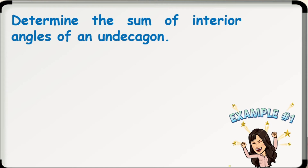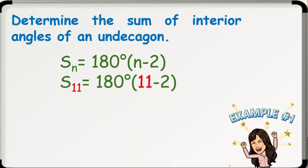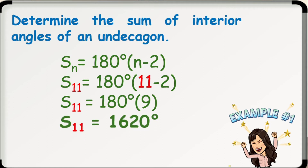Now, let's have the following examples. Number 1: Determine the sum of interior angles of an andecagon. Recall that the sum of the interior angles of a convex polygon with n sides is S sub n equals 180 degrees times the quantity of n-2. The number of sides of an andecagon is 11. So, substituting 11, we have S sub 11 equals 180 degrees times the quantity of 11-2. Simplifying, S sub 11 equals 180 degrees times 9. Thus, the sum of interior angles of an andecagon is 1,620 degrees.